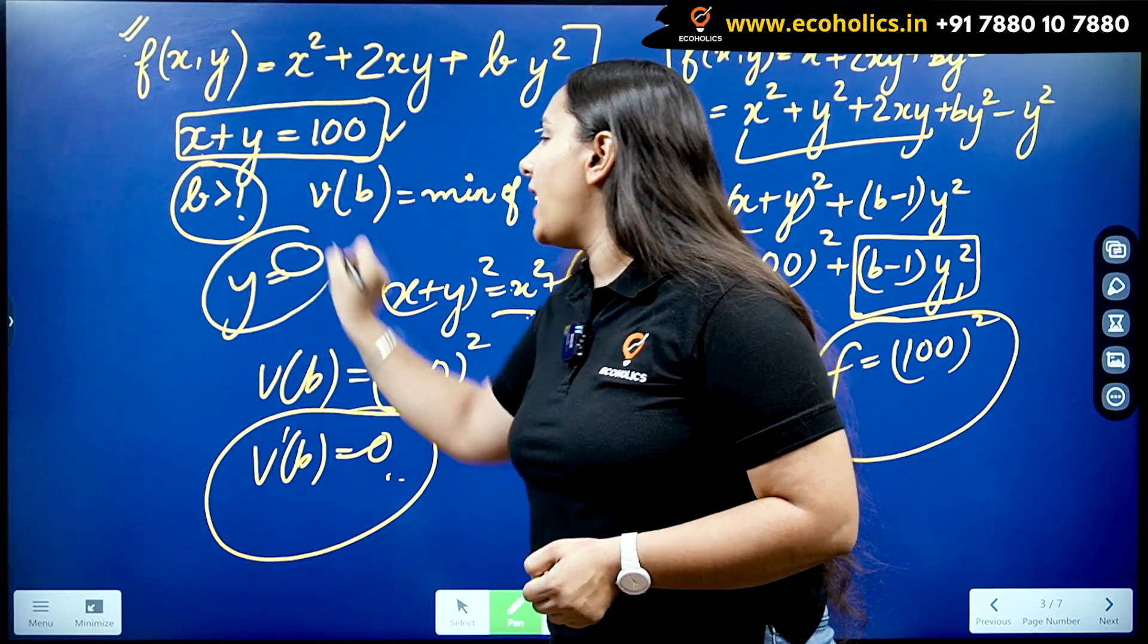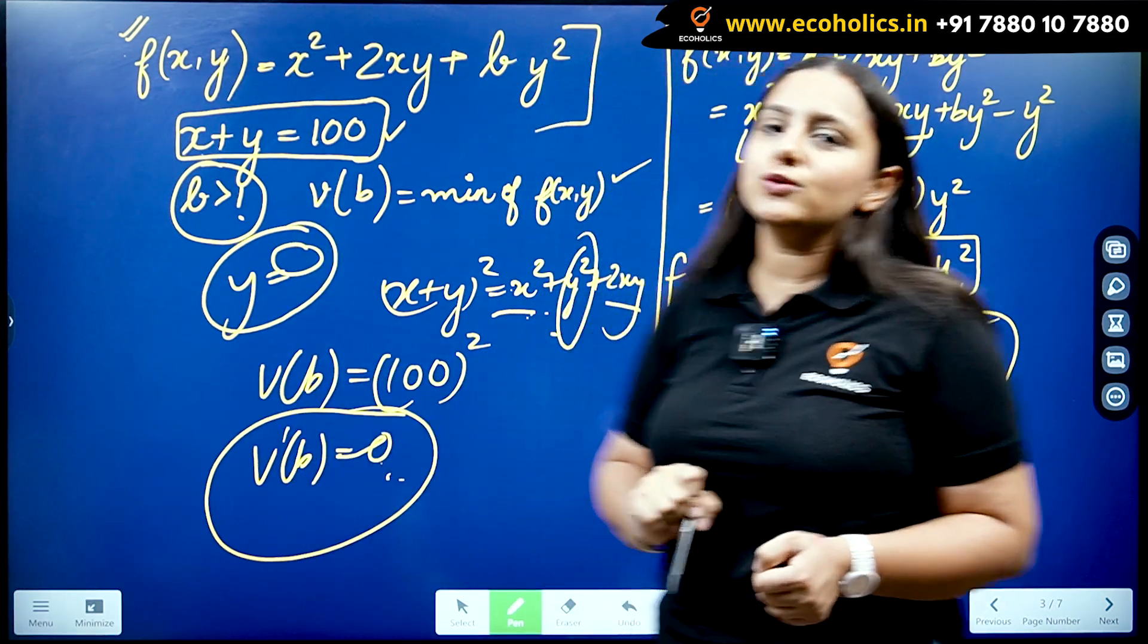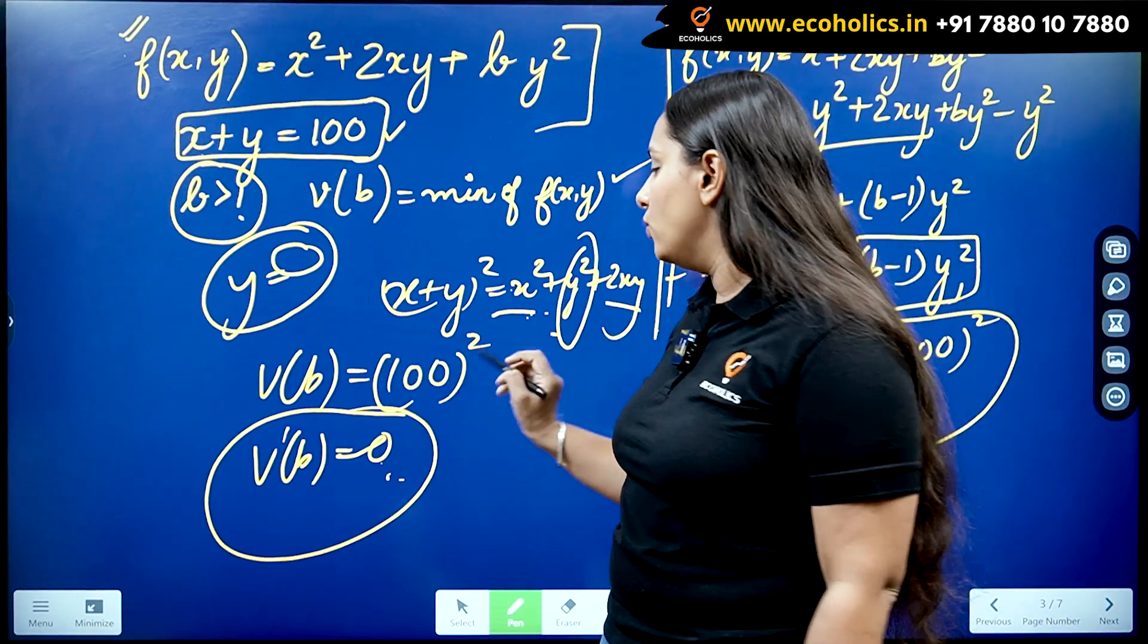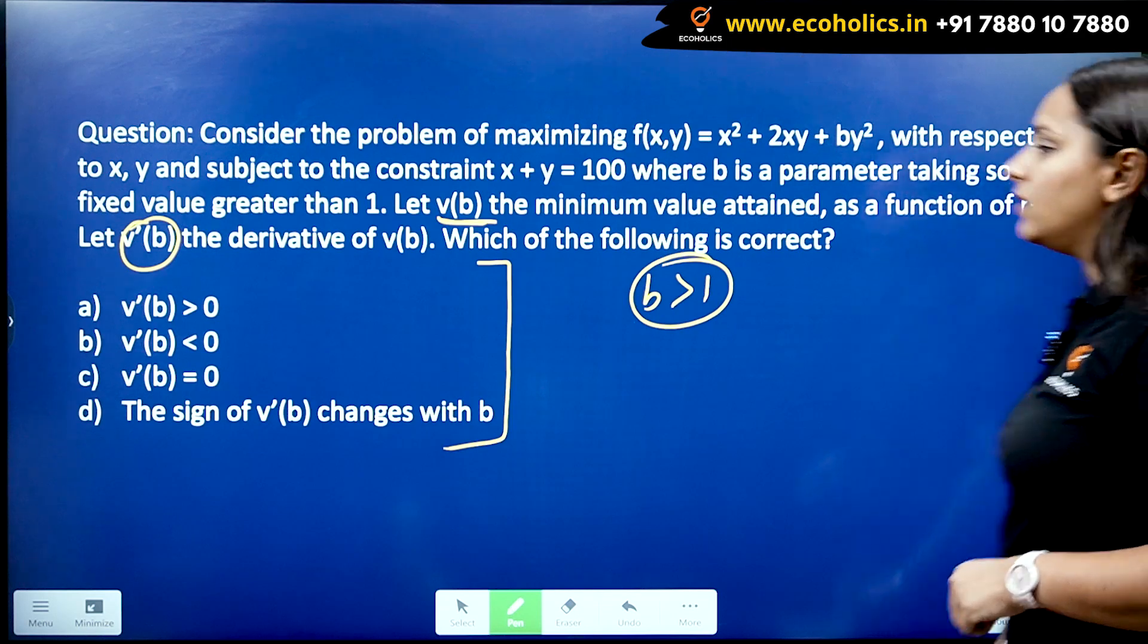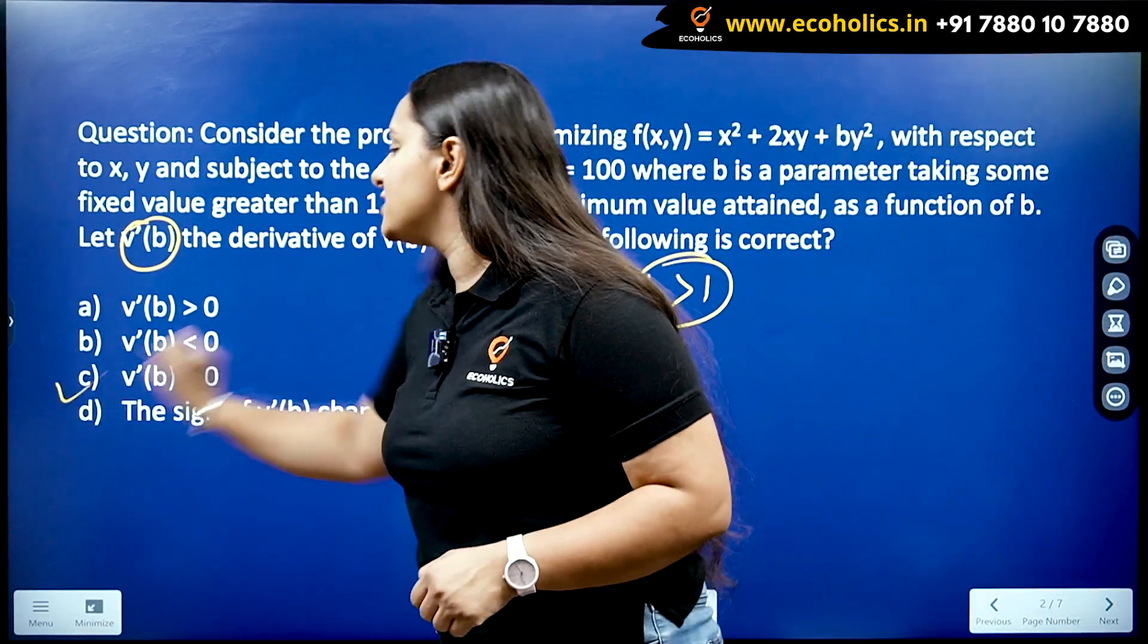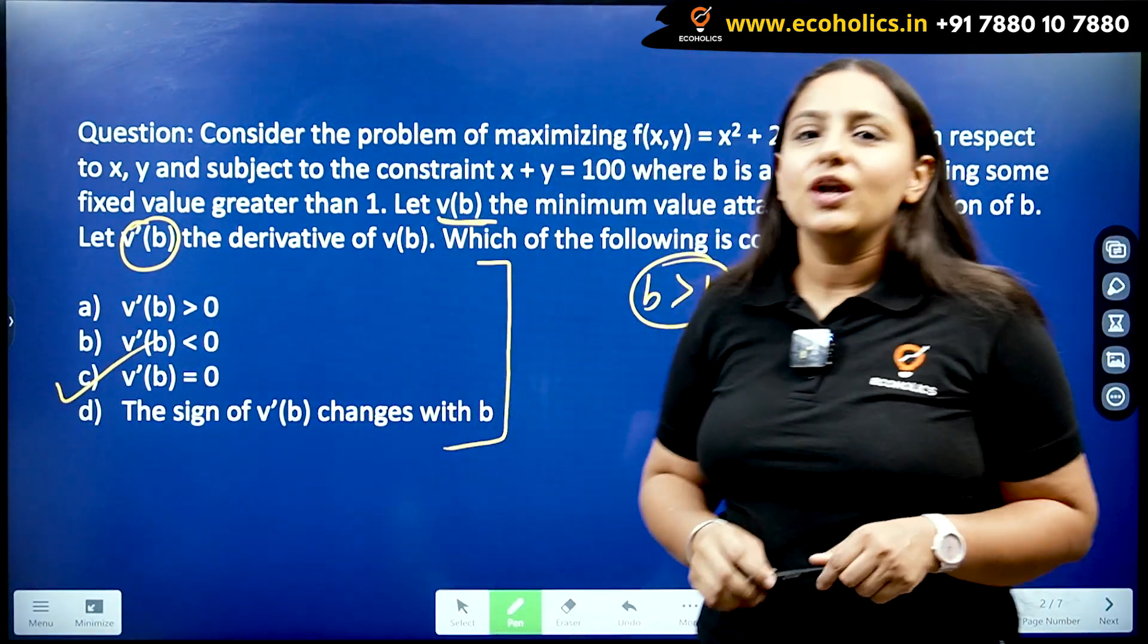It's going to be equal to 0 where y is going to be equal to 0 as well, and the sign of derivative is also 0 because the minimum value this function is attaining is independent of b.